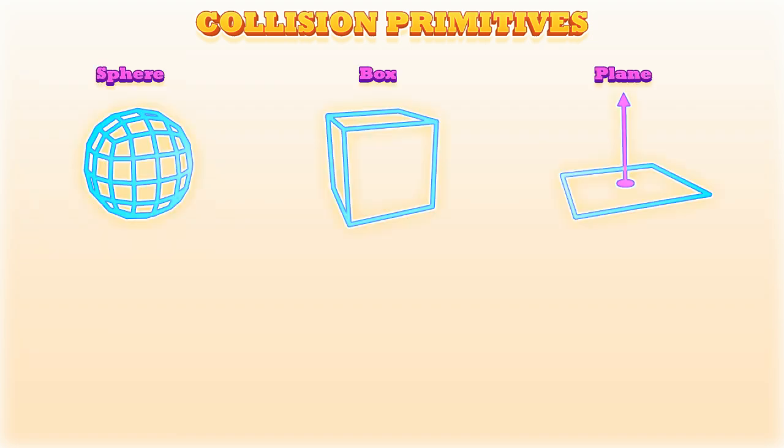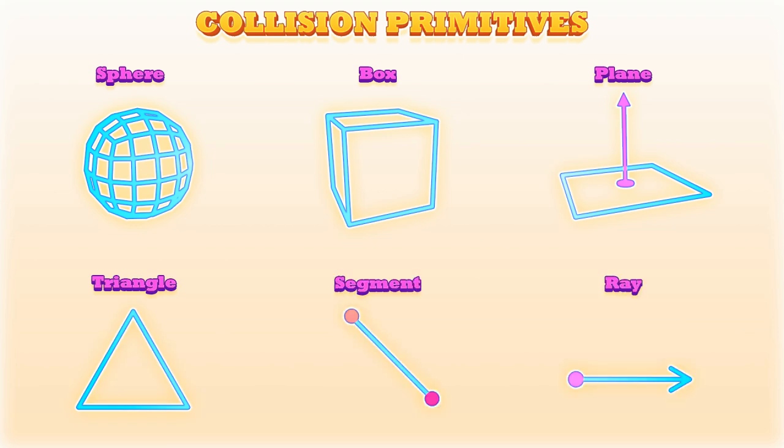Collision tests use a set of primitive geometry, which includes spheres, boxes, planes, triangles, line segments, and rays.